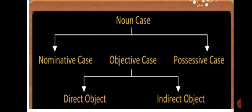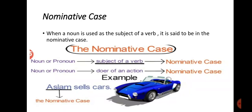There are two objects: direct objects and indirect objects. So let's talk about nominative case. When a noun is used as the subject of a verb, it is said to be in the nominative case.